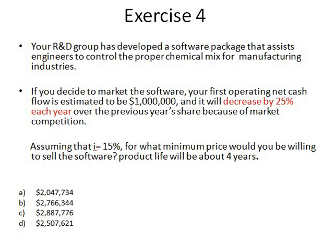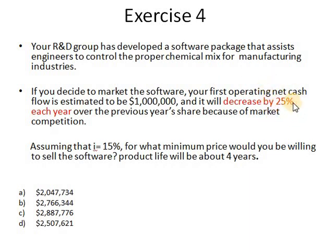The last exercise is related to geometric gradients. An R&D group developed a software package. The first operating net cash flow is estimated to be $1 million, and it will be decreasing each year by 25%. This is a geometric gradient because the change is a percentage, not a fixed value, and because it is decreasing.